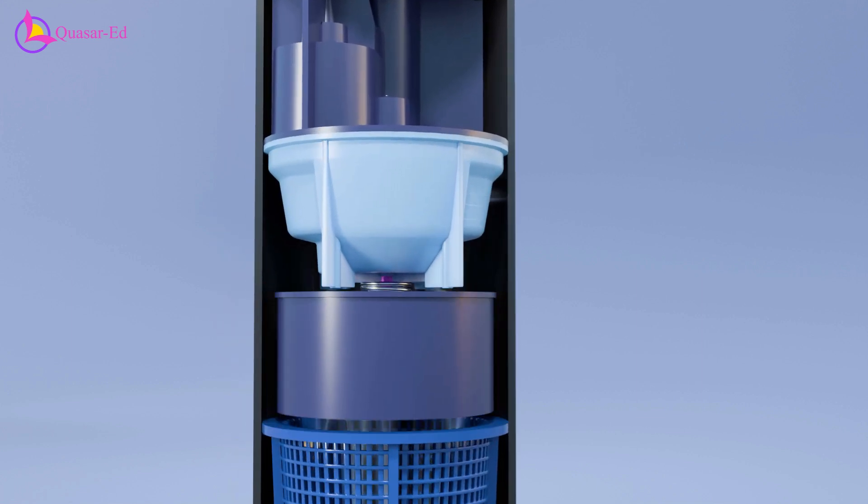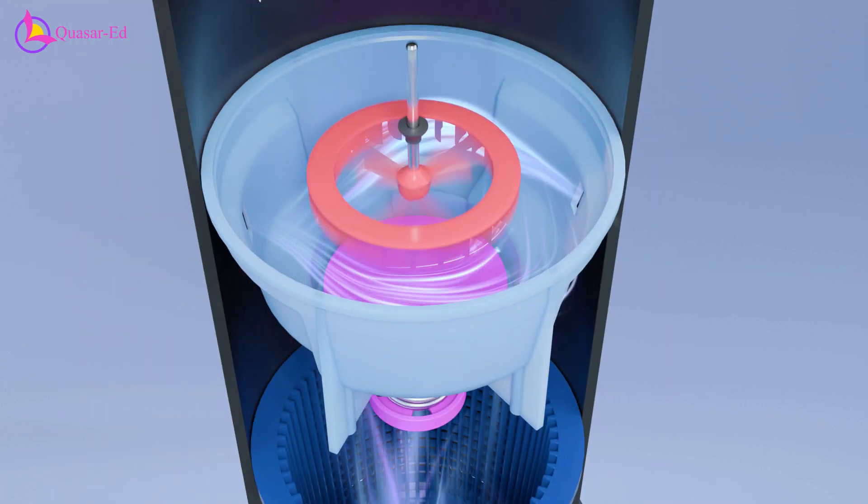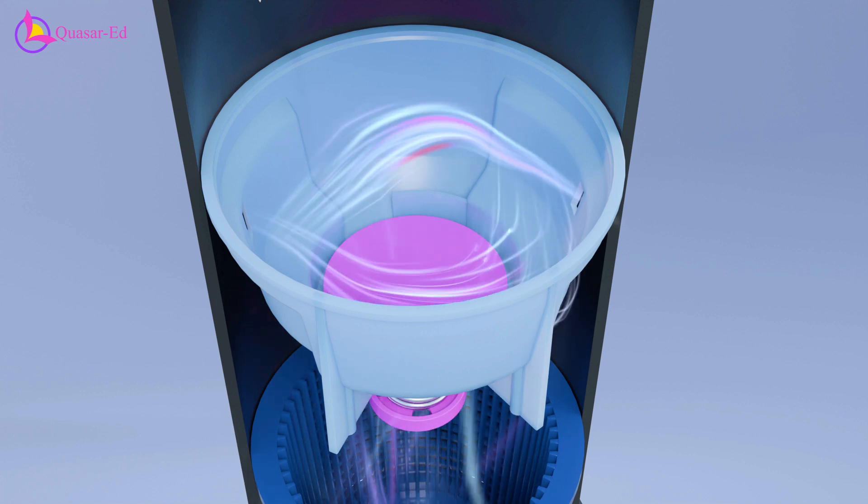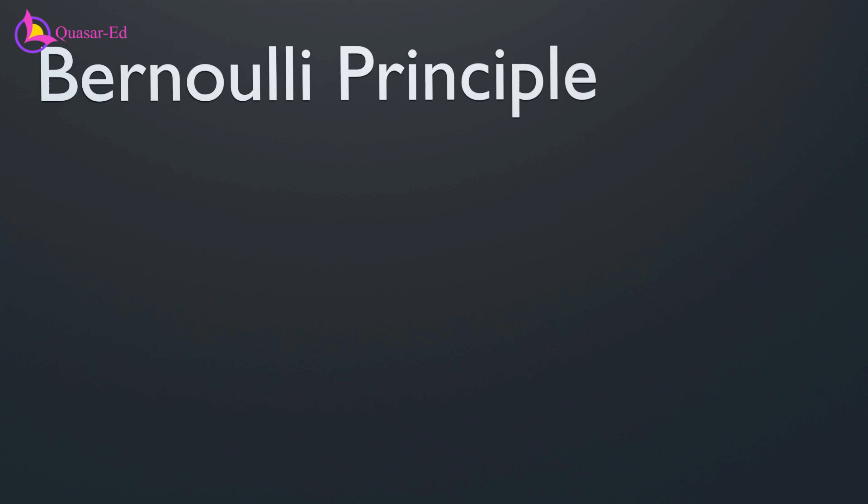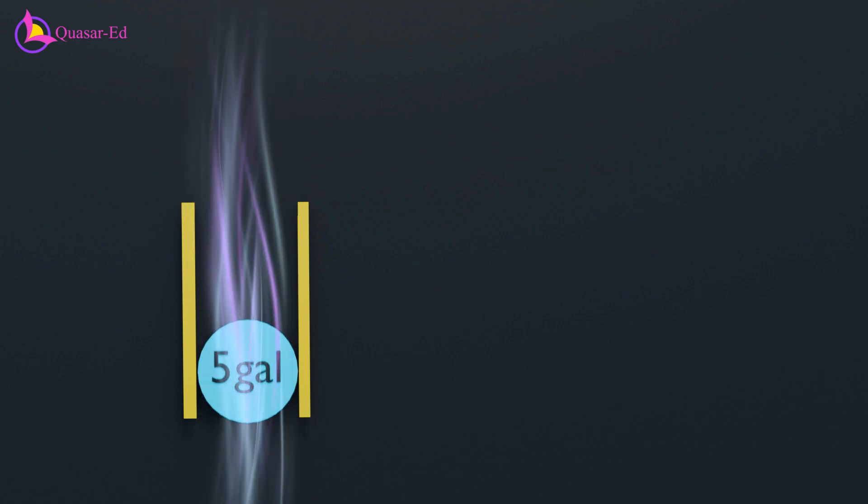Once pressurized water passes through the filter, it enters the turbine chamber through two small openings. These openings restrict the water flow, causing the water velocity to increase significantly. This phenomenon is explained by the Bernoulli principle, which states that an increase in fluid velocity occurs simultaneously with a decrease in pressure or potential energy of the fluid.